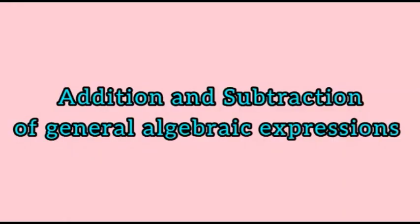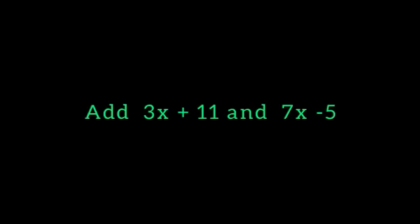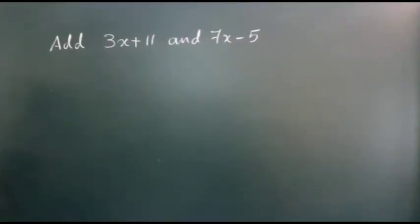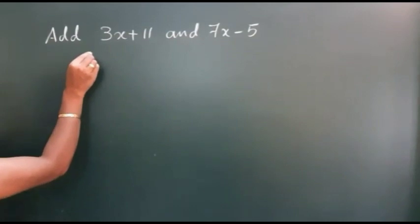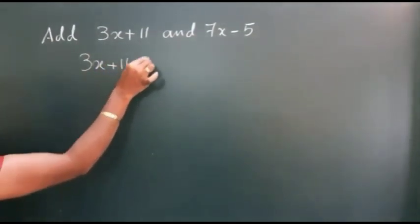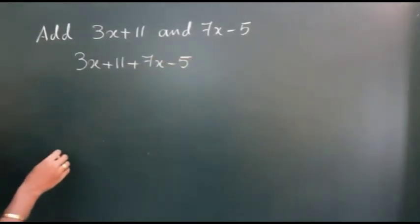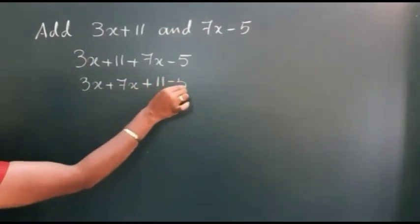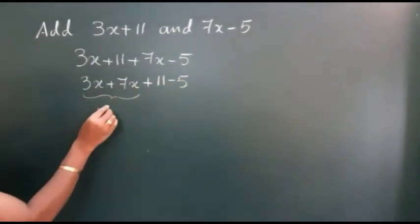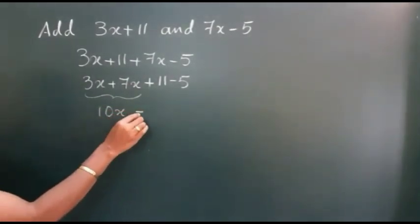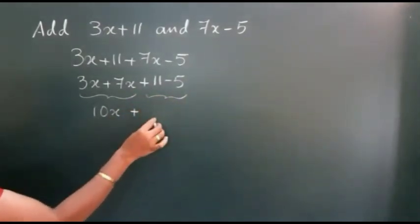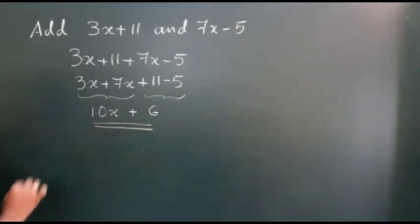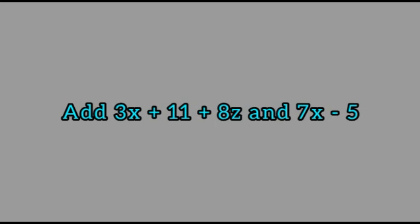Next, we are going to consider the addition and subtraction of general algebraic expressions. First example: add 3x plus 11 and 7x minus 5. We write 3x plus 11 plus 7x minus 5. First we consider the like terms: 3x plus 7x, and plus 11 minus 5. Adding the first two like terms gives 10x. And 11 minus 5 is 6. So the answer is 10x plus 6.